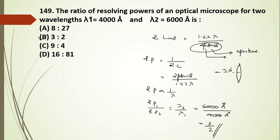The resolving limit is the minimum separation between two objects that can be distinguished. For a telescope, the resolving limit is expressed as lambda divided by the aperture A.